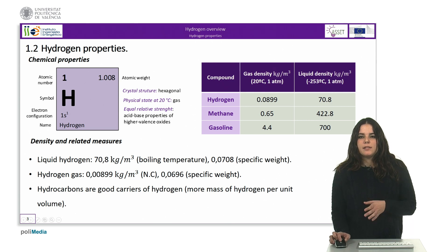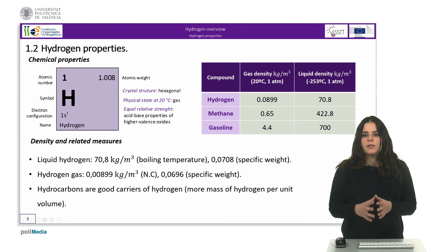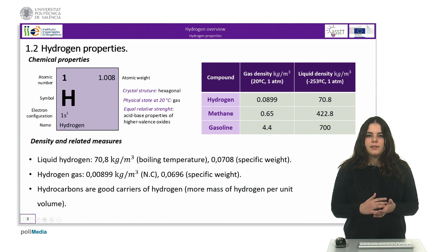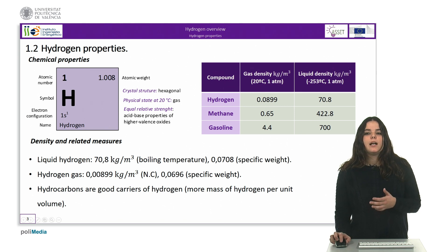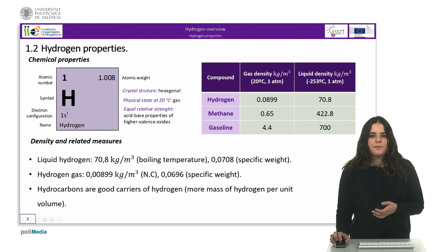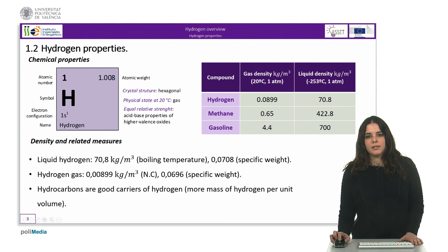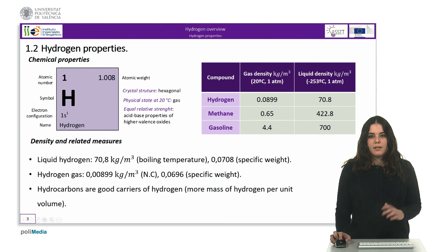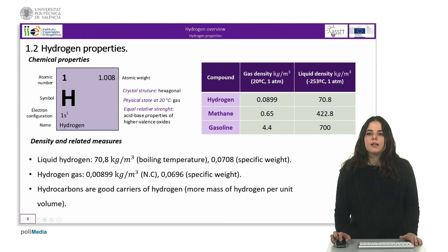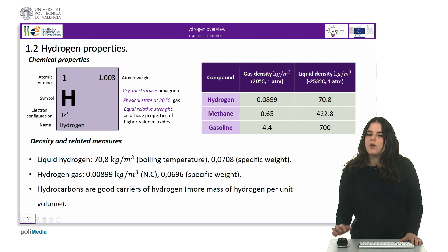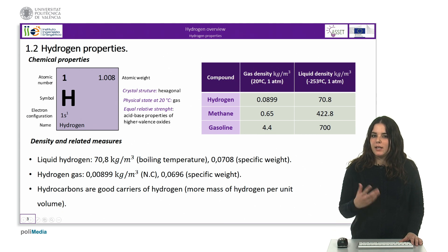Additionally, the density can be expressed through the specific weight. The specific weight is the relationship between the density of a substance and the density of a reference substance at the same temperature and pressure. For gases, the reference substance is air, while for liquids it is water. Hydrogen gas has a specific weight of 0.0696, which makes it very light, and liquid hydrogen has one of 0.0708, also considerably lighter than water.